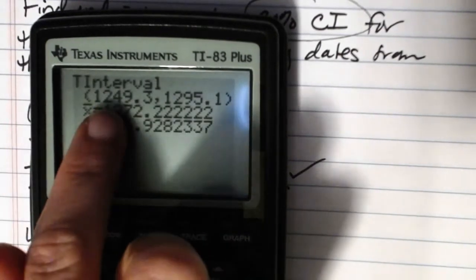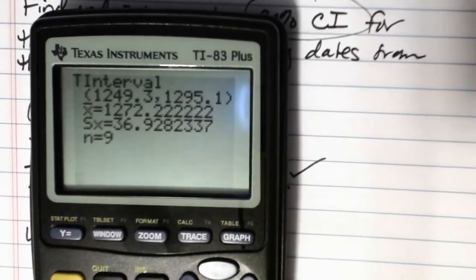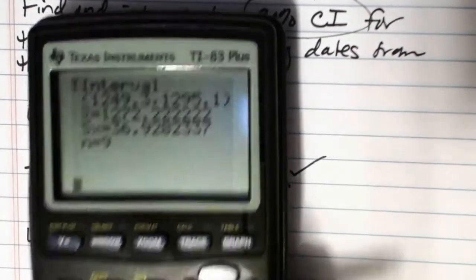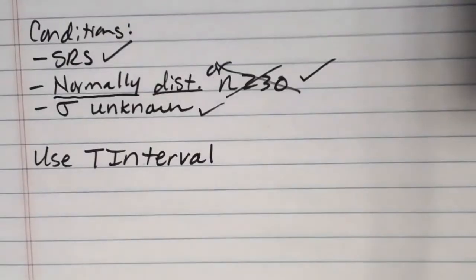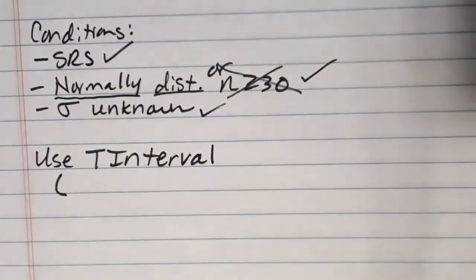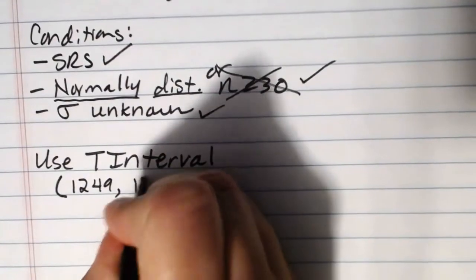And there's our interval at the top. The year is about 1249 to 1295 roughly if we're rounding to the nearest whole year. So we used T interval in the calculator. The interval that we got out was 1249 to 1295.